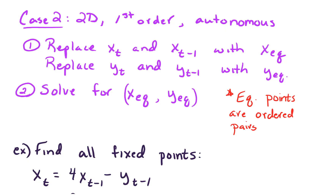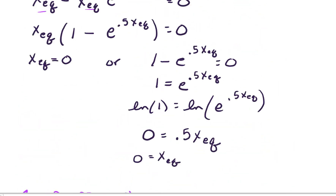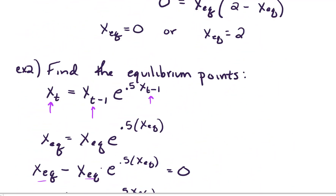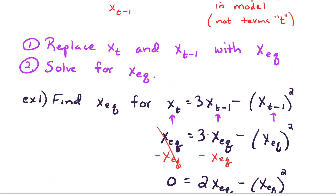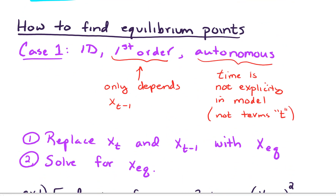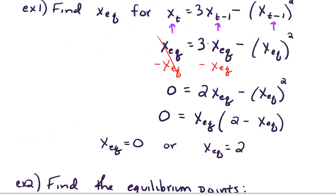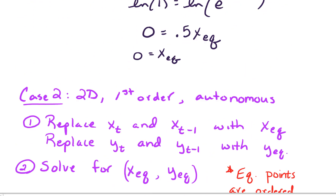Hello. In this video we're going to look at more examples of how to find equilibrium points, and we're going to look at two additional cases. In the last video we looked at case 1, which was a one-variable, first-order autonomous system. In this video we're going to look at case 2 and case 3.